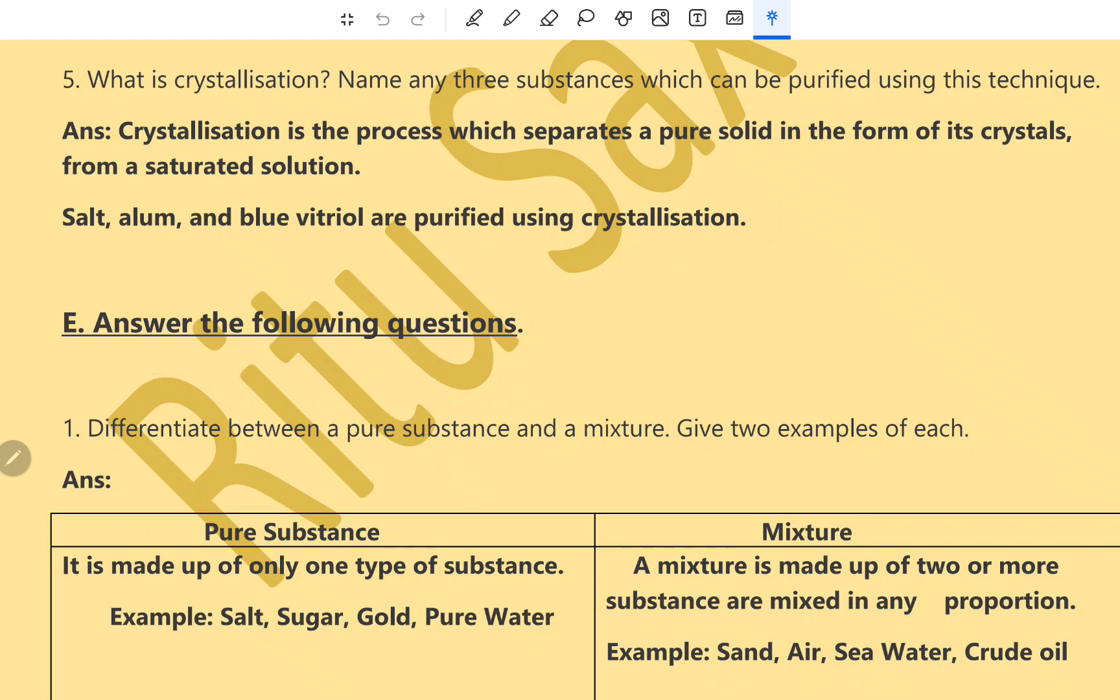Answer the following question. This is long answer type. Differentiate between a pure substance and mixture. Give two examples of each. Pure substance. Dear students, it is suggested that whenever there is a differentiate or difference between question, you should write in tabular form. So you can remember it easily. Pure substance. It is made up of only one type of substance. That is salt, sugar, gold, pure water, etc.